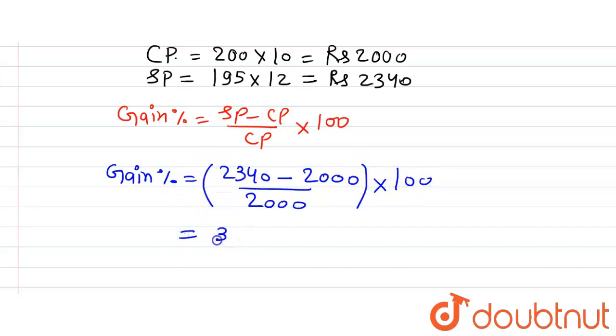So solving it further, we will get 340 divided by 2000 multiplied by 100.